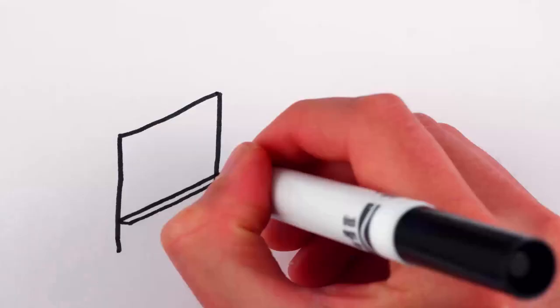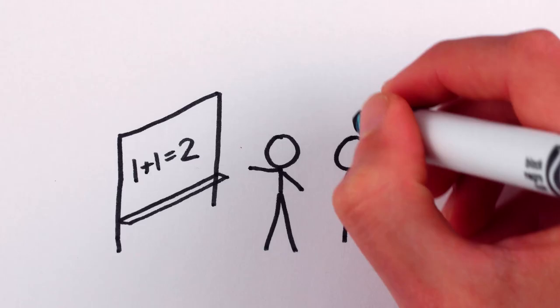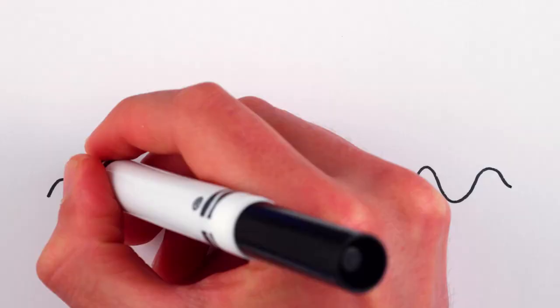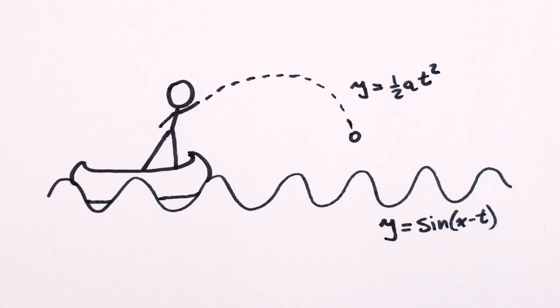Some think it means nothing profound, or that math is simply something we've made up to be useful. Others think it means that there is something fundamentally mathematical about nature.